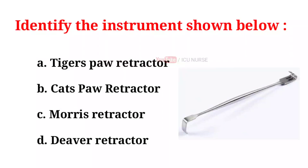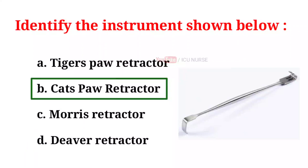Identify the instrument shown below. A. Tiger Spar Retractor. B. Cat Spar Retractor. C. Morris Retractor. D. Deaver Retractor. And the correct answer is B. Cat Spar Retractor.